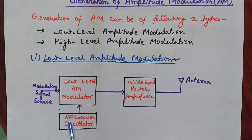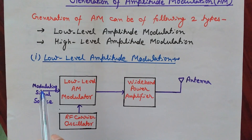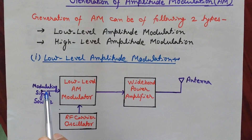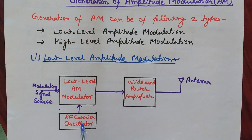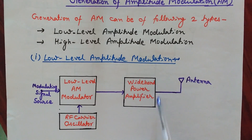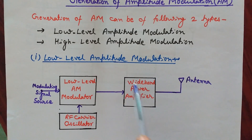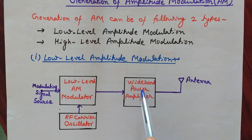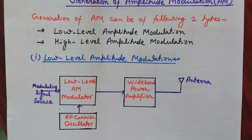Since this is low-level amplitude modulation, we do not amplify the modulating signal or the RF carrier before applying them to the low-level AM modulator. At its output we get the AM modulated wave, and then we use a wideband power amplifier to increase its power level. Wideband is used to preserve the sidebands of the amplitude modulated wave, and then it is transmitted with the help of an antenna.